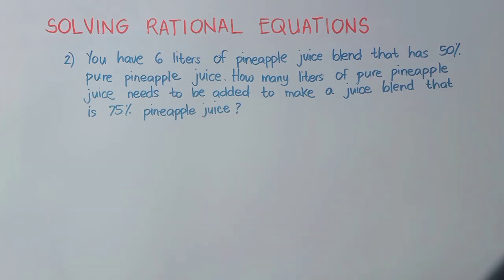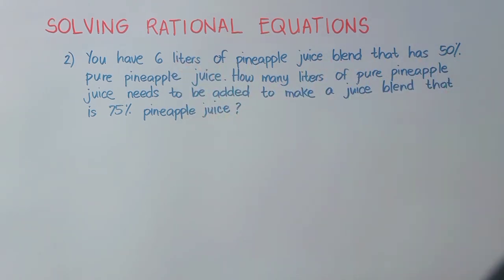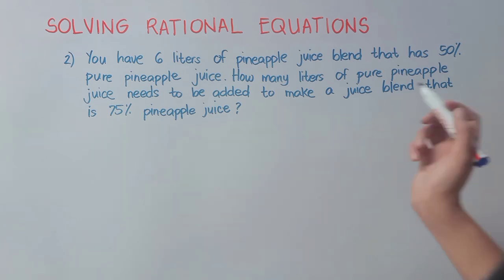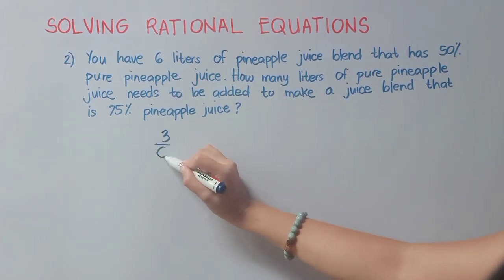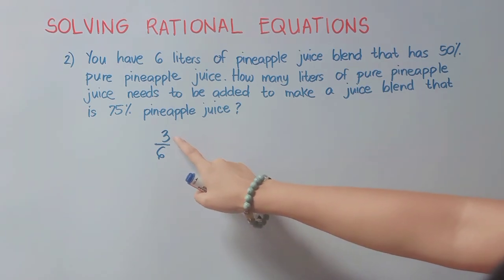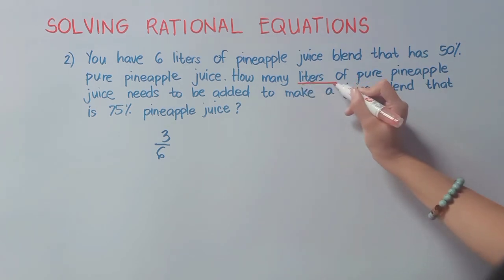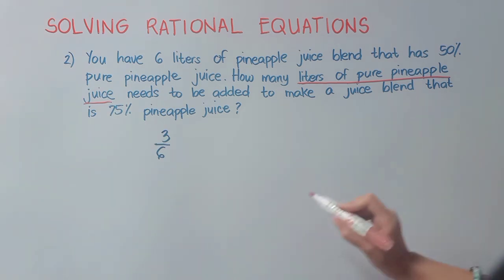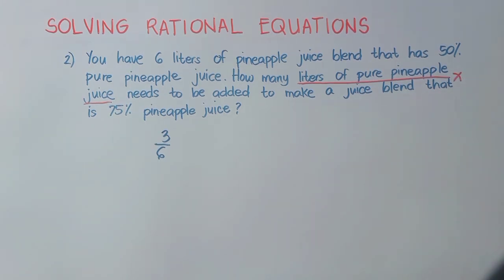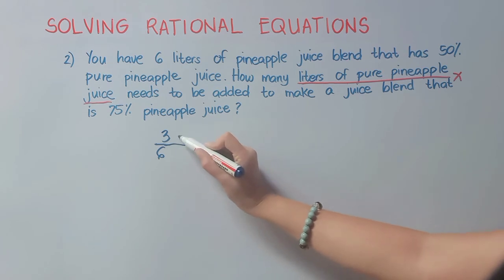We are now on number 2. You have 6 liters of pineapple juice blend that is 50% pure pineapple juice. How many liters of pure pineapple juice need to be added to make a blend that is 75% pineapple juice? At first, we have 6 liters where 50% — that is 3 liters — is pure pineapple juice. We add x liters of pure pineapple juice, so we add x to 3 and x to 6.